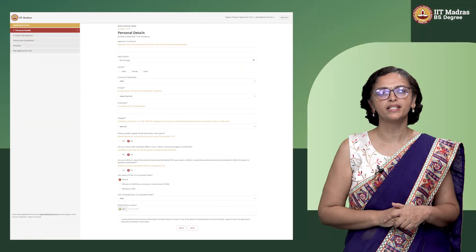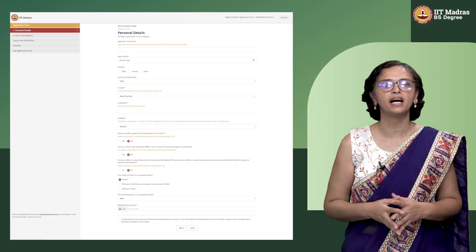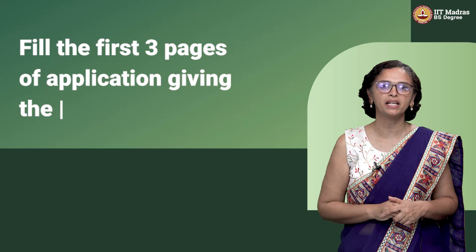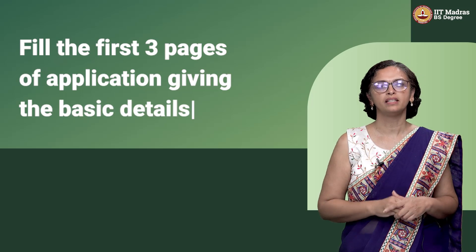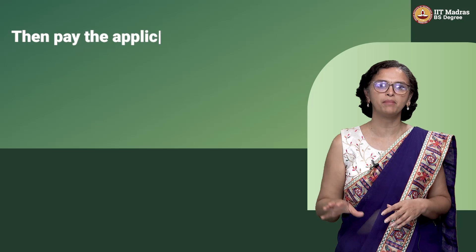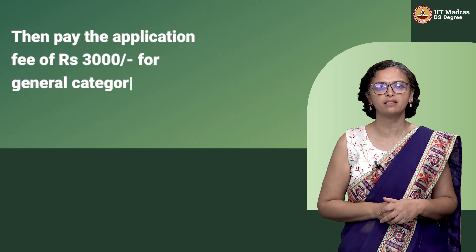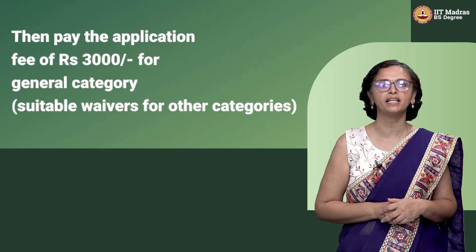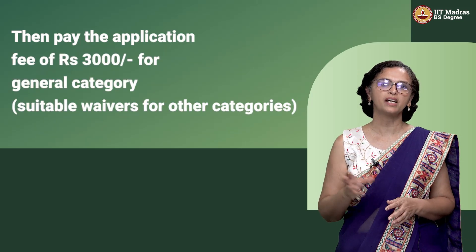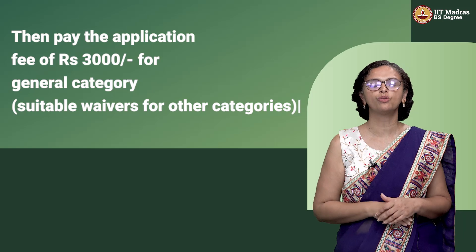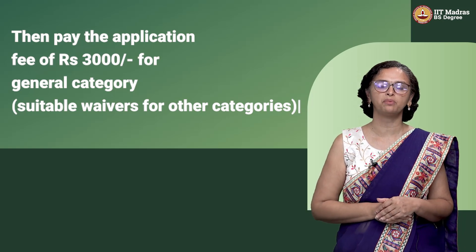Regarding the qualifier process — by now all of you should have probably filled in the application. There'll be some basic details collected from you, and then comes the payment page. The fee for the qualifier process is rupees 3000 for the normal category. There are waivers for those who belong to other categories, which you can check when you go into the form.